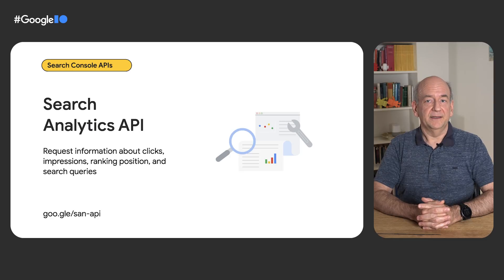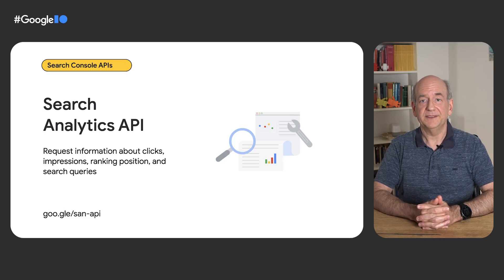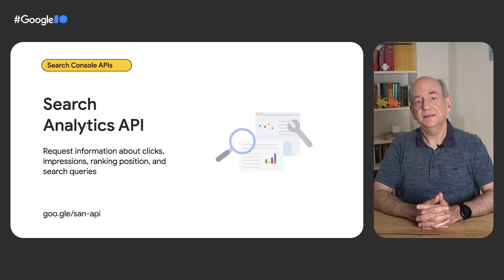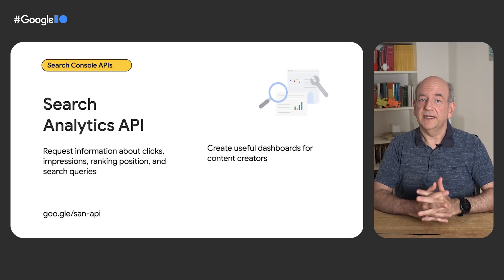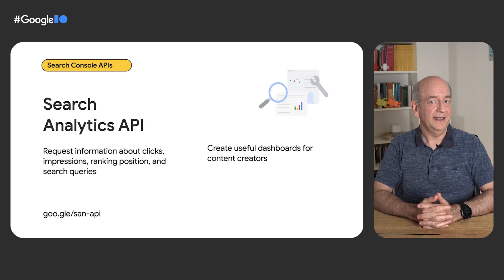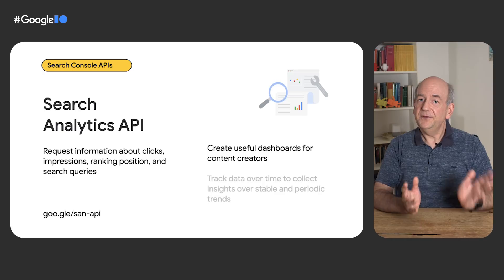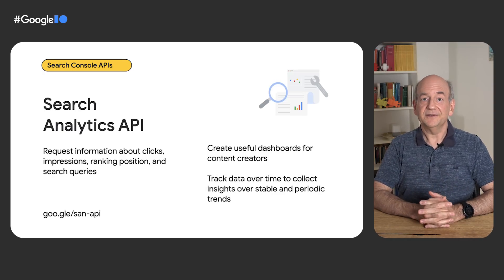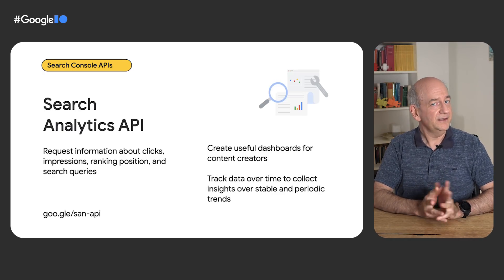With the Search Analytics API, you can request information about clicks, impressions, ranking position, and search queries for the whole website or for parts of it. The data is anonymized according to Google's high internal standards and can be safely stored on your end. This allows you to create useful dashboards within your websites for the content creators. These dashboards help them to understand the current situation and to work out ways to improve. If you track the data over time, you can also collect insights over stable and periodic trends.